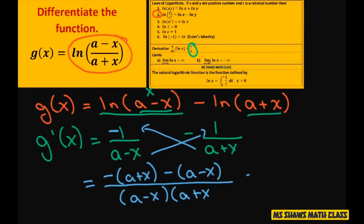Now all you have to do is simplify the numerator. And what happens is you get negative a minus a plus x minus x. So the x's cancel out.